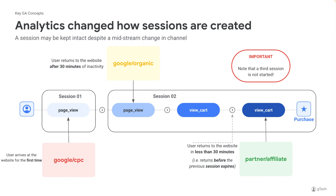So their user scoped source and medium will be Google CPC. Next, they have 30 minutes of inactivity and then later return to the site, starting a new session — session two — and they came back via Google organic. In this case, their session scope dimensions will be Google organic.